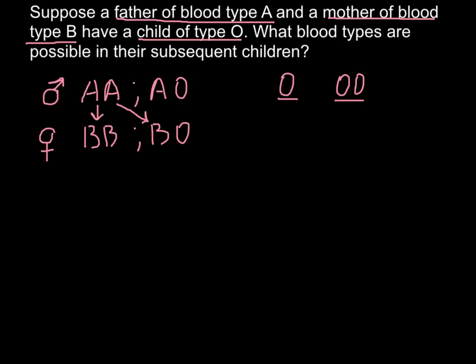So let's consider cross AA with BO, and such a cross would give us only one allele O. And there is no way how a child may get a second O allele.